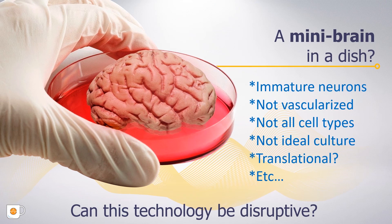Brain organoids generated from induced pluripotent stem cells, or iPSCs, have emerged as a scaled-down and three-dimensional model of the human brain, mimicking various developmental features at the cellular and molecular levels. Despite recent advances in understanding cellular diversity, there is no evidence that these organoids can actually form complex and functional neural networks that might resemble early human brain formation. Our research has been focusing on trying to see if these brain organoids can actually mimic these very early stages of neural network formation.